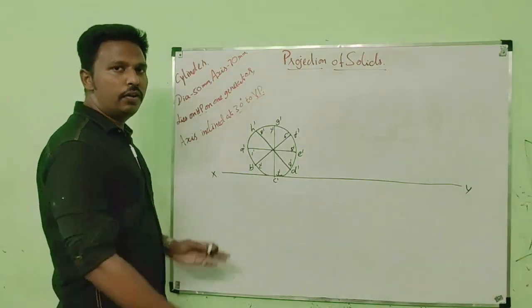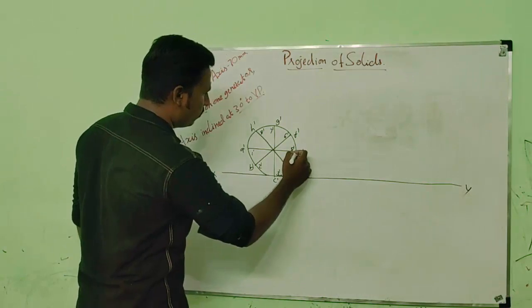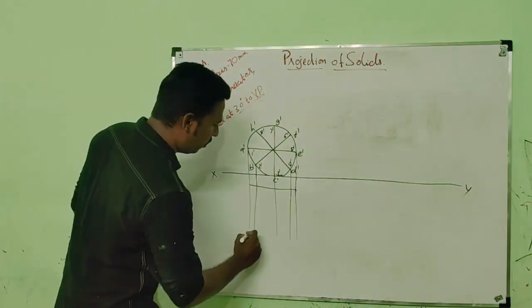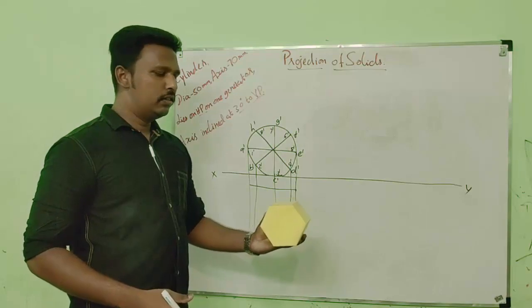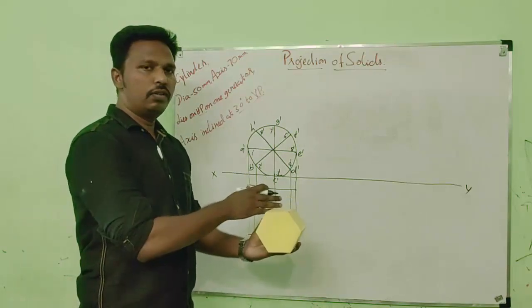And now transfer all the points to the top view. Let us draw the top view. This is the orientation. And the front face is A, B, C, D and rear face is 1234.